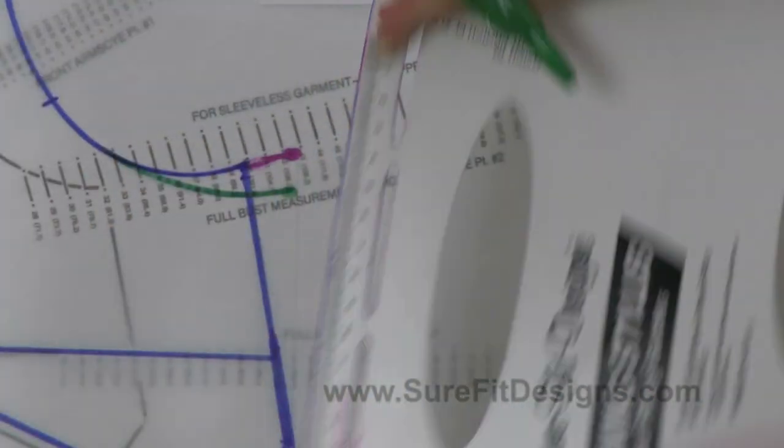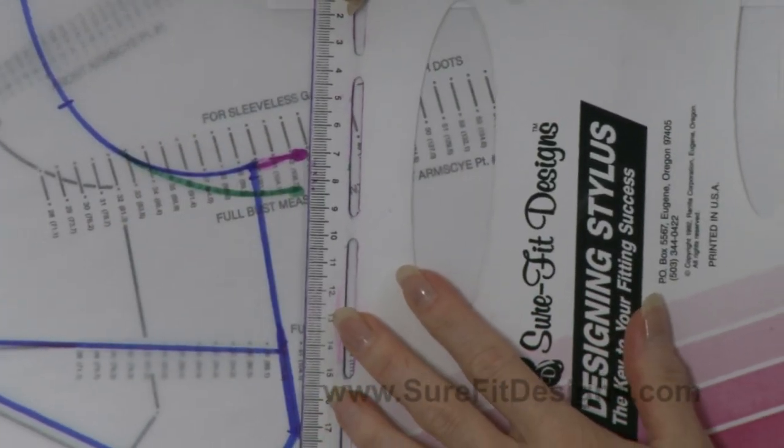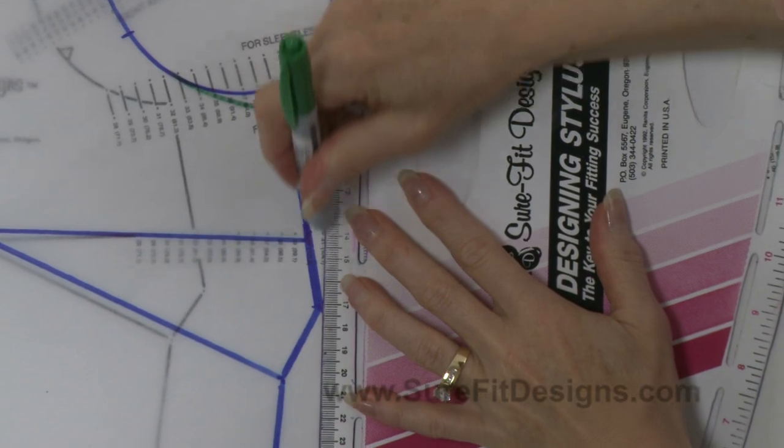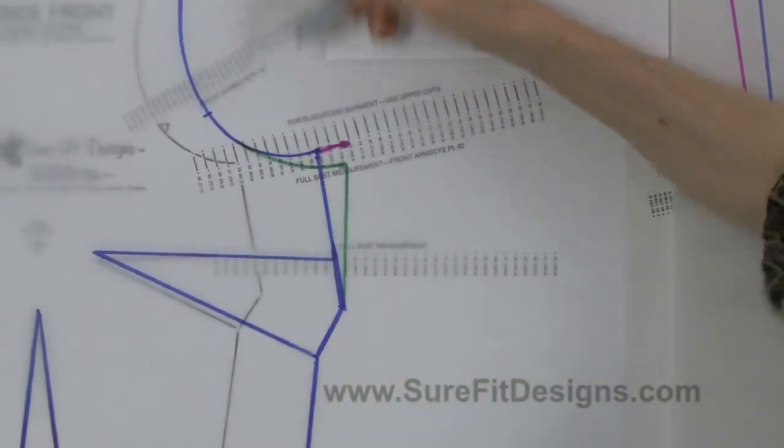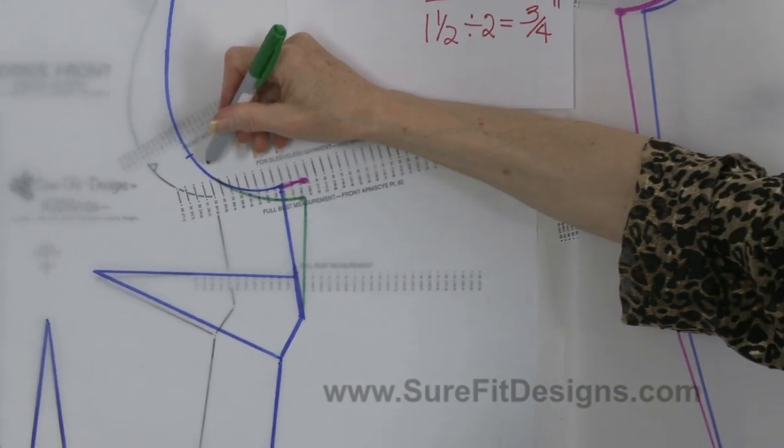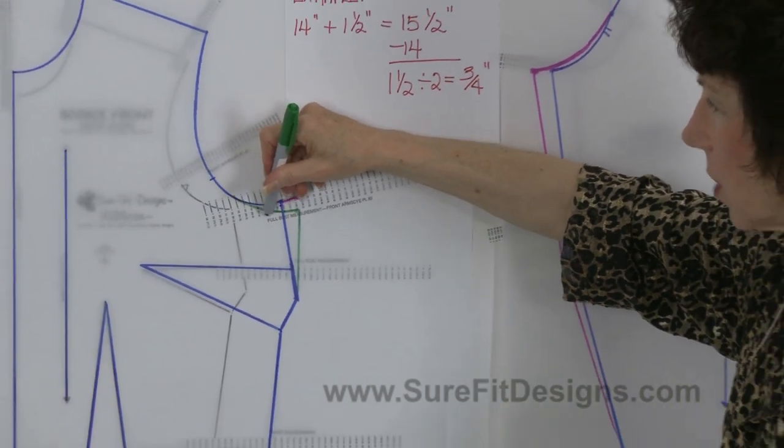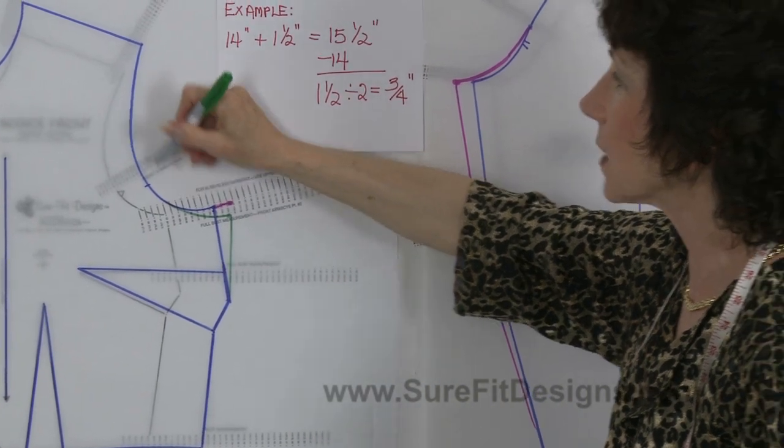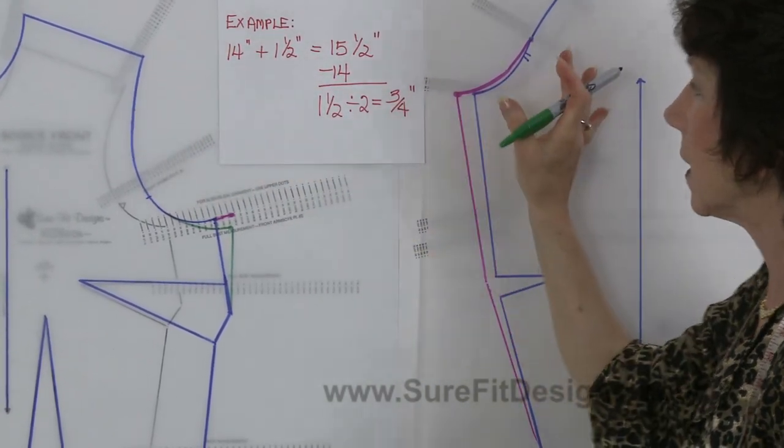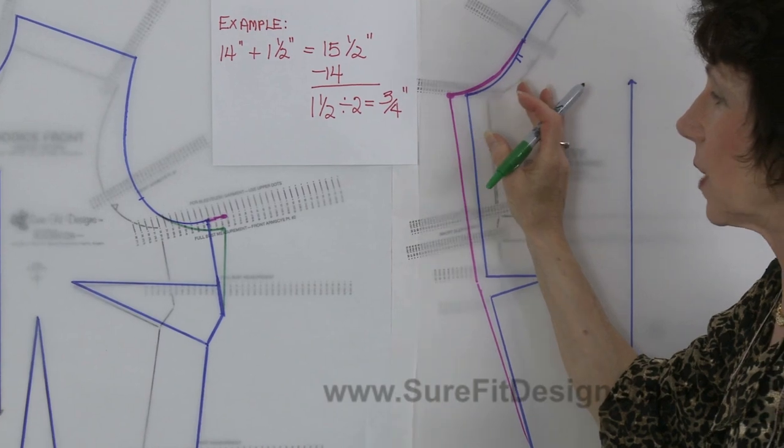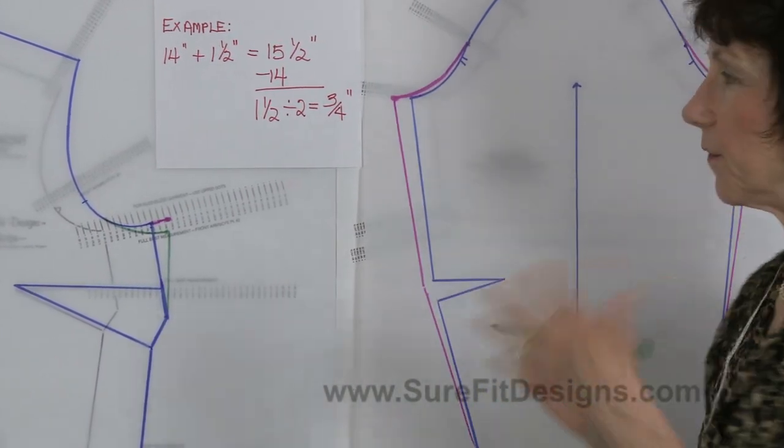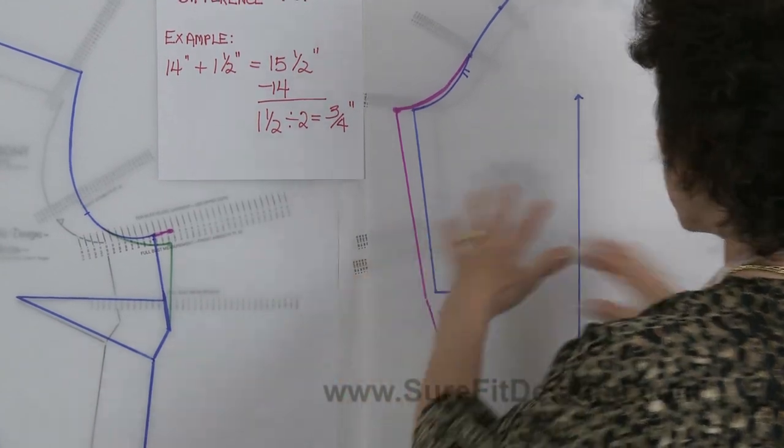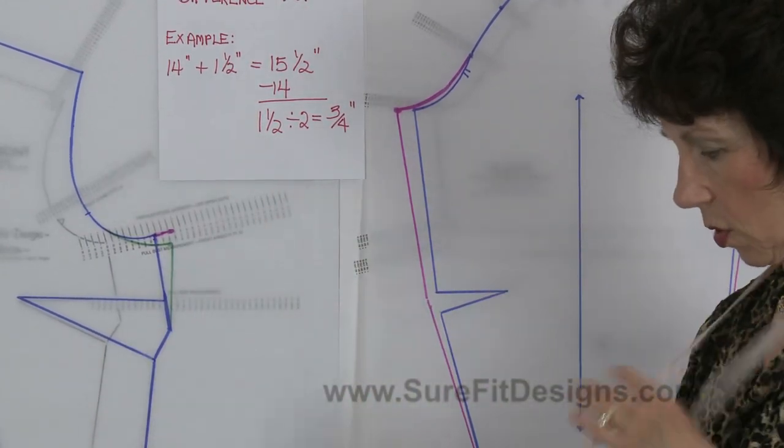Let me get my stylus here and reconnect this. So then your underarm would look like this, and then you would blend this down into your dart space. It makes your bodice a little bit wider, but it also helps to lengthen the armhole or the arms eye and give it the correct amount of space that you need in order to get this sleeve in place.